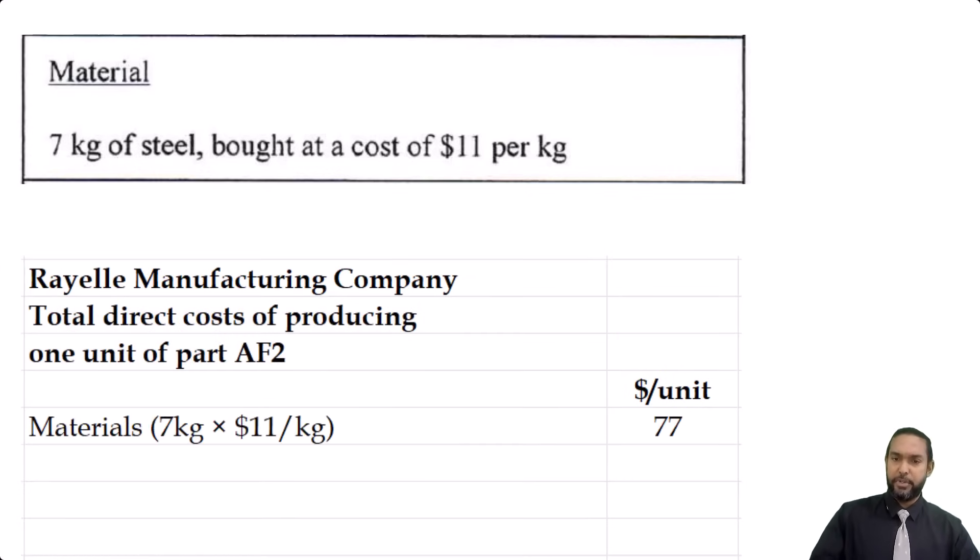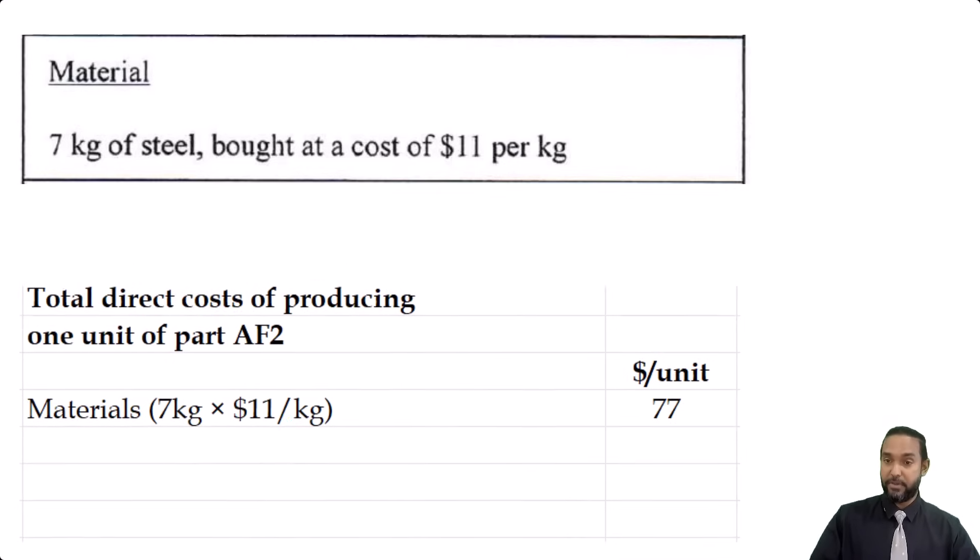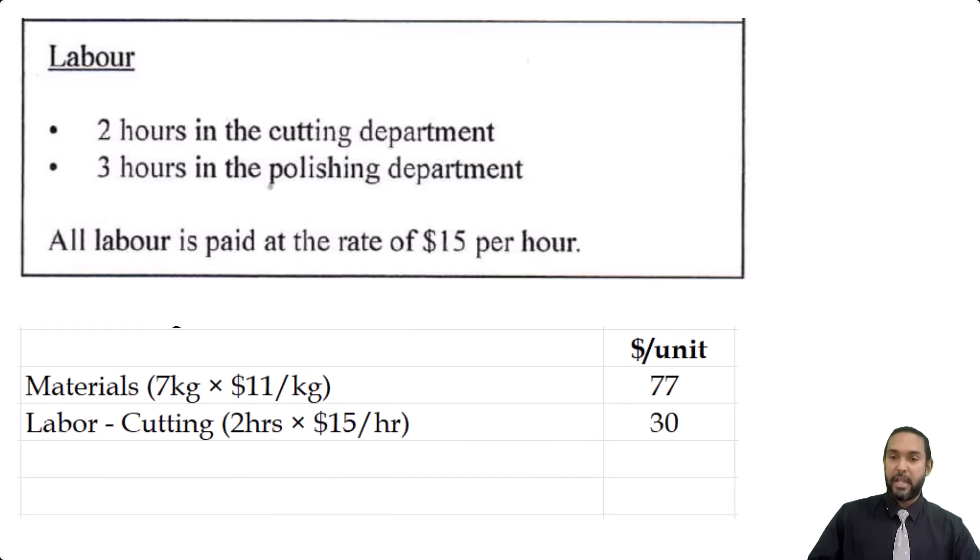So I'm starting with the materials, which is seven kilograms for each unit by $11 per kilogram, which is $77 per unit. Then I have the labor in the cutting department. So the cutting department, we use two hours at a cost of $15. And then the polishing department is three hours at a cost of $15, which gives us $45. And when you add up all three items, you're simply going to get $152.